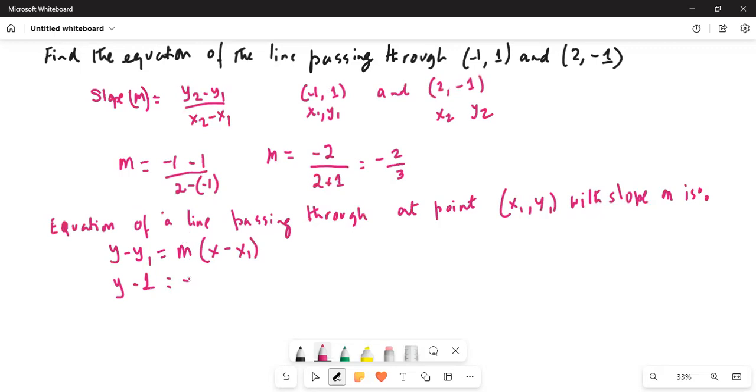The slope is -2 over 3. And x minus x1, where x1 is -1, becomes x plus 1. So we get y minus 1 equals -2/3 times (x plus 1). Now we can further simplify this.